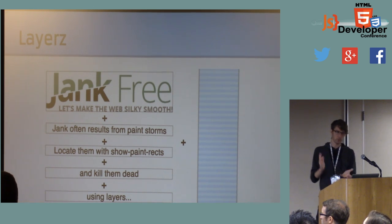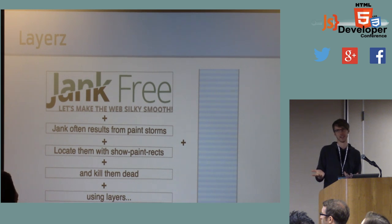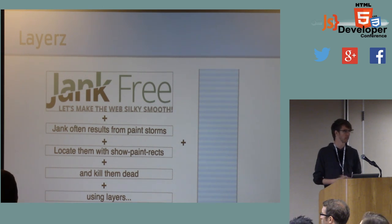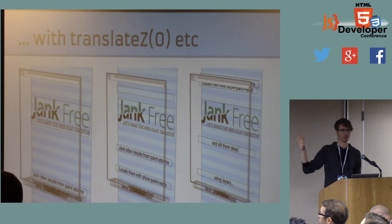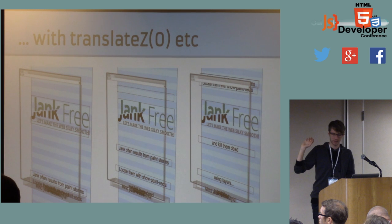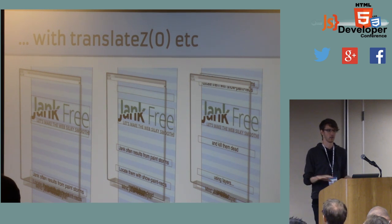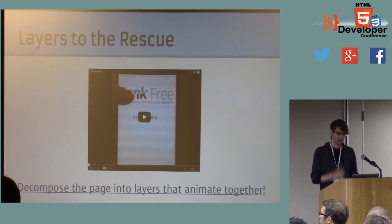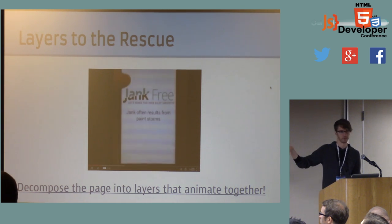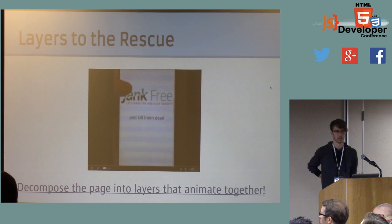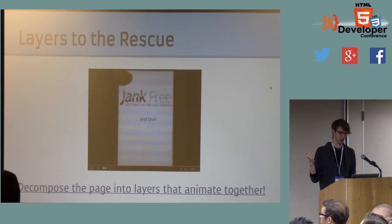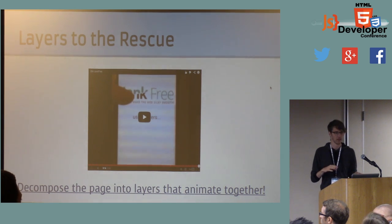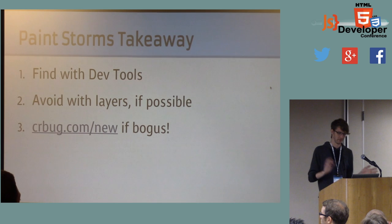This is the translate-Z-zero hack — terrible, but it's what we've got. You can use these 3D transforms to put stuff forcibly into a layer, and then as you update the transform, nothing needs to repaint. With paint rects still enabled, you'll notice the only thing flashing is the scroll bar — all those parallax-y elements flying in and out are doing so with transforms and aren't causing any repainting. The takeaway is you can find these bad scenarios pretty easily with DevTools. It's a little harder to fix them, but you essentially want to use the layer system if at all possible.